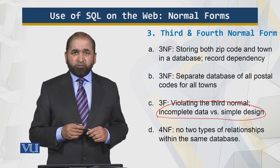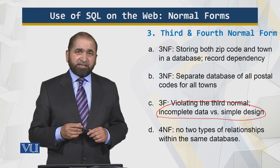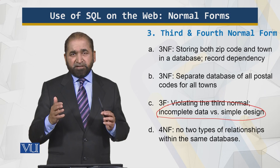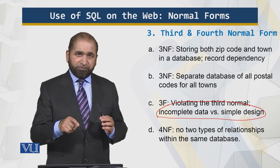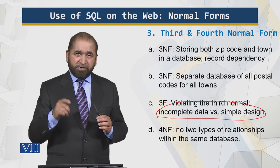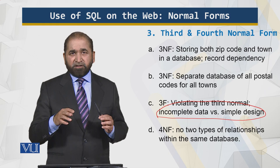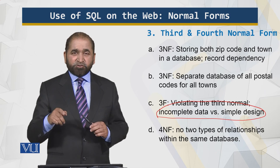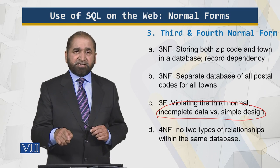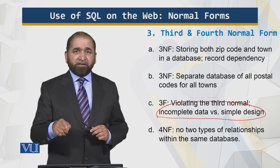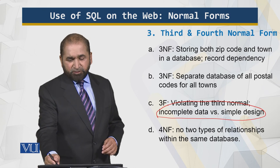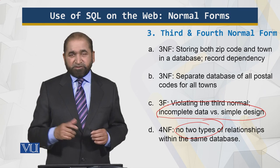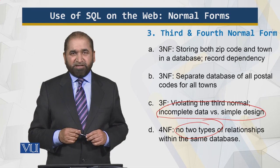Fourth Normal Form: if there is a meeting at a certain time and place between two people, the question is whether it is a joint meeting or a conflict. That conflict scenario is addressed here, which is why two types of relations are not allowed. That is the Fourth Normal Form. That's all for this module — thank you very much.